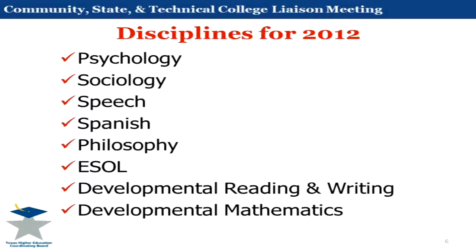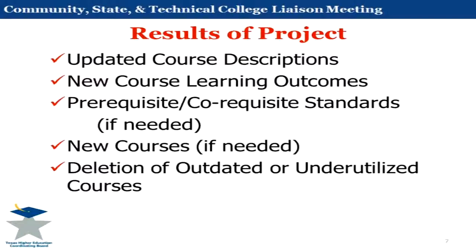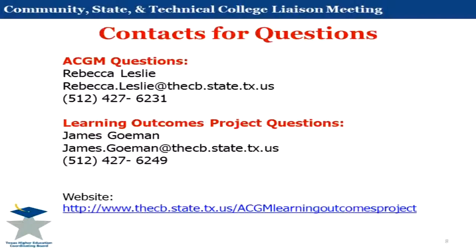And the developmental courses — the developmental stuff was ripe for some revision and improvement, and it's certainly very widely used. Results of the project: in addition to the course descriptions and outcomes, since we've got these faculty experts together, we figure we ought to go ahead and ask them: what's outdated — what's in the manual that just shouldn't be there anymore? And conversely, what changes have happened in your field, and what new courses need to be added due to those changes?